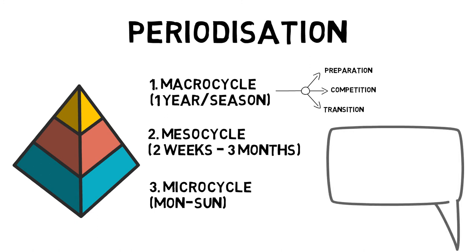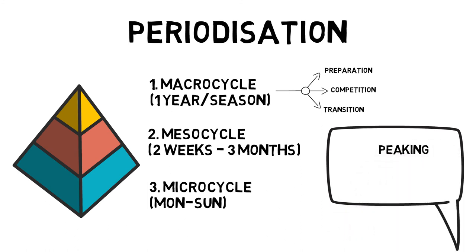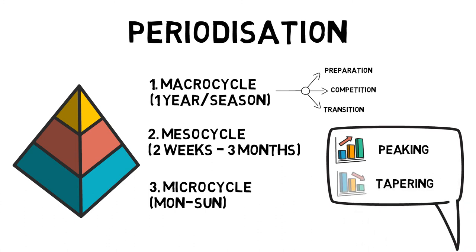Careful manipulation of these cycles allows for periods of peaking, which is when an athlete is at the height of physical and psychological conditioning, such as planning to peak at the Olympics or a big final. Tapering is a reduction in workload prior to major competition to enable the athlete to reach peak performance.